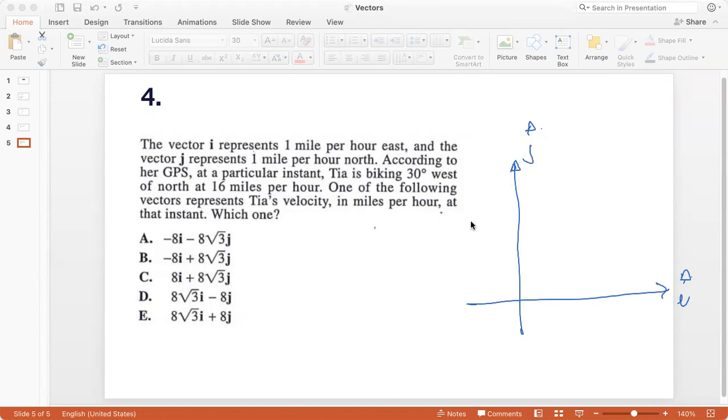Okay. So west of north is going to be this, 30 degrees west of north at 16 miles per hour, right? So the measure of the vector is 16. One of the following vectors represents Tia's velocity at that instant, which one?